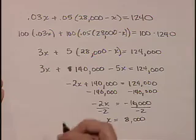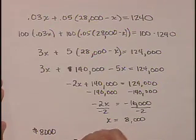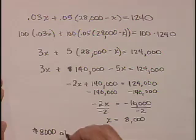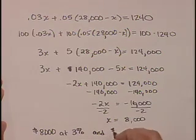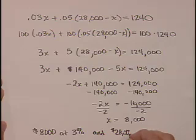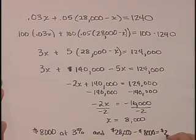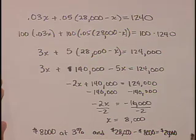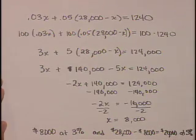To finish this up, we have $8,000, which is X, which is the amount of money at 3%, and $28,000 minus 8,000, which is $20,000, at 5%. The solution to this problem is that there's $8,000 at 3% and $20,000 at 5%.